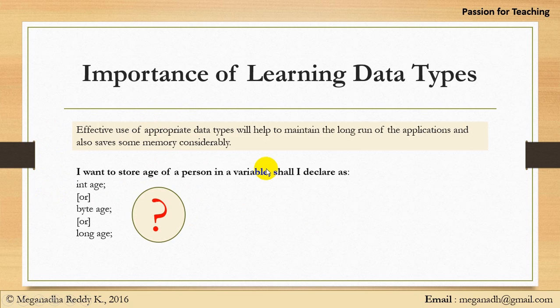So, data types play a very effective role in maintaining the long run of the application, as well as it also saves memory considerably if you choose the appropriate data type. So, let's see what does it mean.